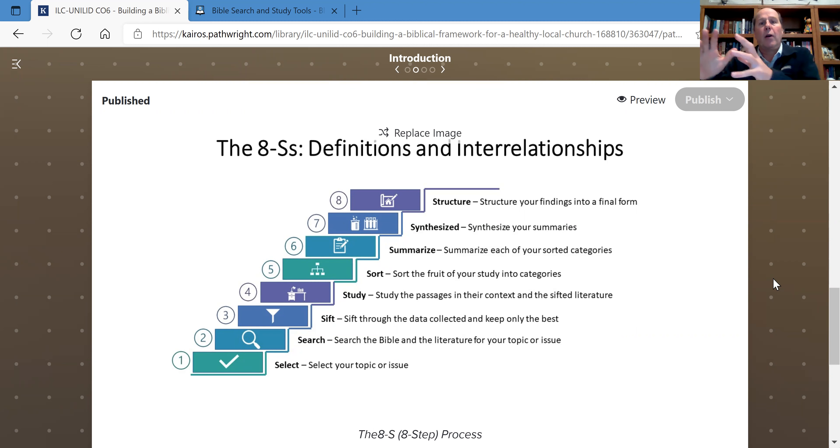Once you do that, you're going to write a summary of meaning for each of these verses. When you get the summary of meaning, you're going to look at all the verses and begin to sort them and put them into categories. Those categories become important because that is how your framework is going to begin to be laid out.